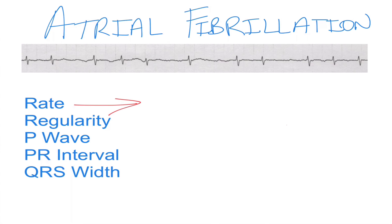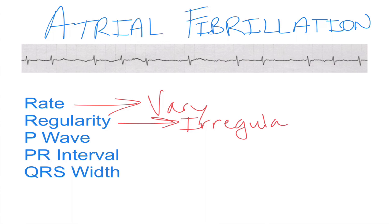You'll see on your monitors that the rate jumps from maybe 70 to around 130 beats per minute. It's very irregular, and that leads us into the regularity — it is a very irregular rhythm. You can see here in the strip that each of these QRS complexes are a varying distance apart from one another.